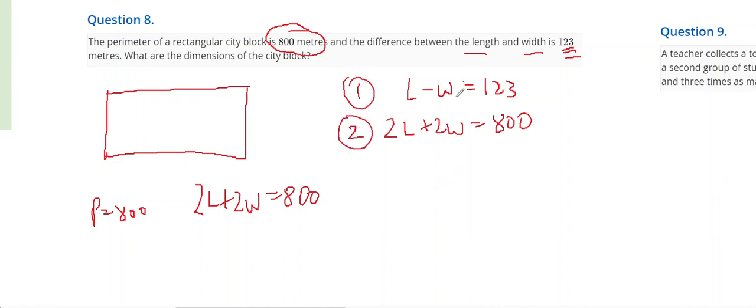Now, if I add them together at the moment, nothing will eliminate. So I'm going to choose to multiply equation 1 by 2 and that will set up a minus 2W that when I add to the 2W will give me an elimination. I'm going to write that under here. So 2 times L is 2L, 2 times minus W is minus 2W, and 2 times 123 is 246.